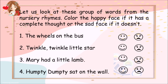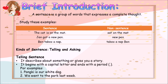Let us look at this group of words from the nursery rhymes. Color the happy face if it has a complete thought, or the sad face if it doesn't. 1. The wheels on the bus. 2. Twinkle, twinkle, little star. 3. Mary had a little lamb. 4. Humpty Dumpty sat on the wall. A sentence is a group of words that expresses a complete thought.